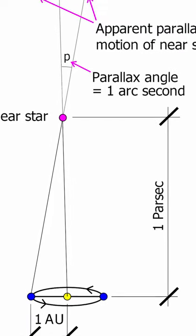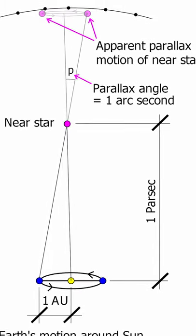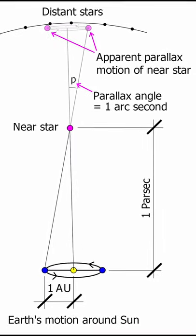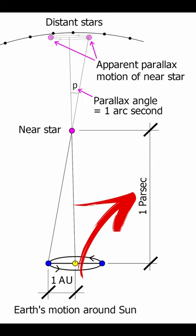If the half angle were one arcsecond or one 3600th of a degree, we would call the distance a parallax second or parsec for short.